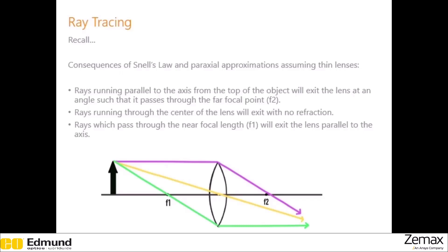Rule two: rays running through the center of the lens will travel straight through with no refraction. Technically, the ray is refracted at each side of the lens, but they cancel out such that the path is straight. If you have a thick lens, the path through the lens between the two refractions will displace the ray so it is jogged down instead of going straight through. This is why we're assuming a thin lens — so we can assume that the path through the center of the lens is negligible, and we can approximate it as straight.